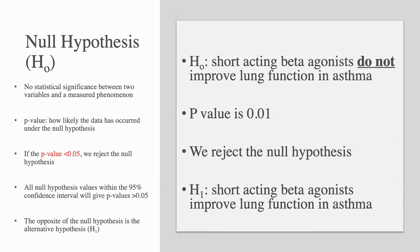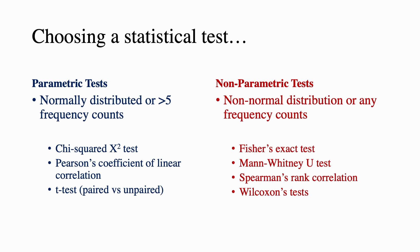Choosing a statistical test: either a parametric test or a non-parametric test. Parametric tests require normal distributions or greater than five frequency counts — tests such as chi-squared, Pearson's coefficient of linear correlation, and t-test (paired or unpaired). For non-parametric tests using non-normal distributions or any frequency counts, you can use Fisher's exact test, the Mann-Whitney U test, Spearman's rank correlation, or the Wilcoxon's test.